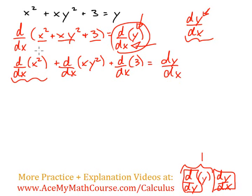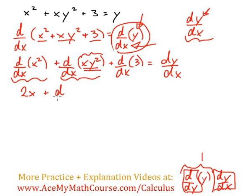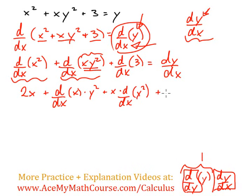Here we have d/dx of x squared. The derivative of x squared is just 2x. Now comes the tricky part of this particular problem — we have to differentiate the whole thing here with respect to x. And since we're multiplying x and y squared, we're going to need to use the product rule. So we're going to have d/dx of x times y squared. Now we're going to use the product rule, so we have x times d/dx of y squared plus d/dx of 3.